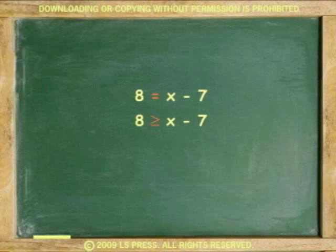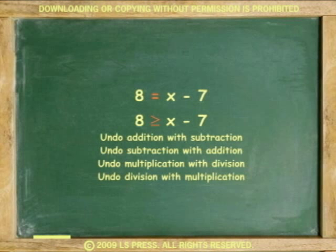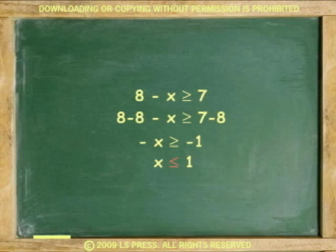Like equations, inequalities can be solved by addition, subtraction, multiplication, and division. Inequalities are solved using the same inverse rules we use in solving equations. However, inequalities change directions when we multiply or divide both sides of the inequality by a negative number.